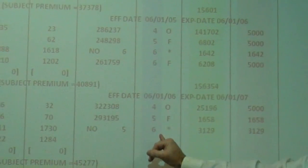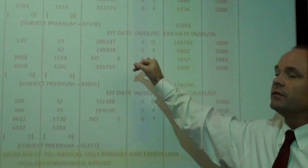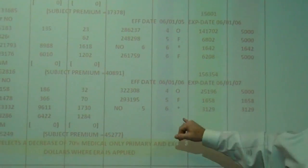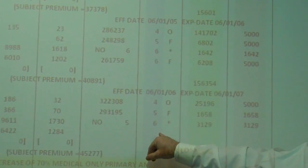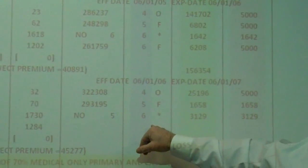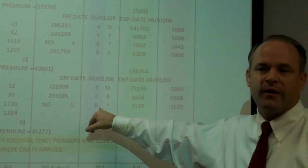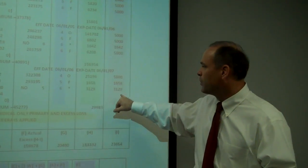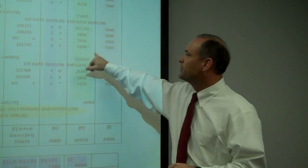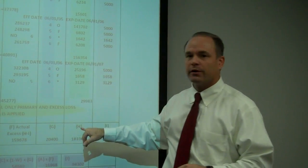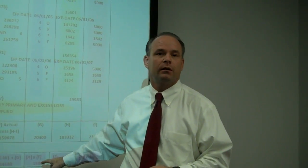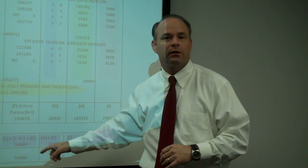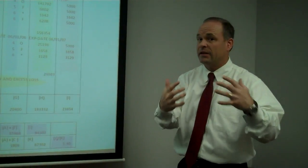Column number eight, this IGA column, anywhere you see a six in that column, that is a medical only claim. It includes no indemnity. In other words, medical bills only were paid on that loss. And that number, those corresponding numbers anywhere you see a six is reduced by 70% or only 30% of those figures is flowing into the formula. So that's a big deal.